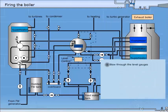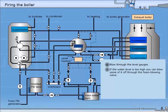Blow through the level gauges. As the pressure is increasing, the water level will rise, but be sure you are able to read the level all the time. If the water level is too high, you can blow some of it off through the foam blowing valve. Do not use the bottom blowing valve as long as you are firing.